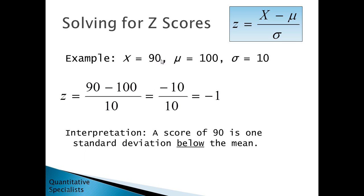Here's an example where the value is less than the mean. We have x of 90, mu of 100, and standard deviation of 10. Plugging these into our z-score formula: z equals 90 minus 100 over 10, or negative 10 over 10, giving a z of negative 1. This is interpreted as: a score of 90 is one standard deviation below the mean — below because it's negative.